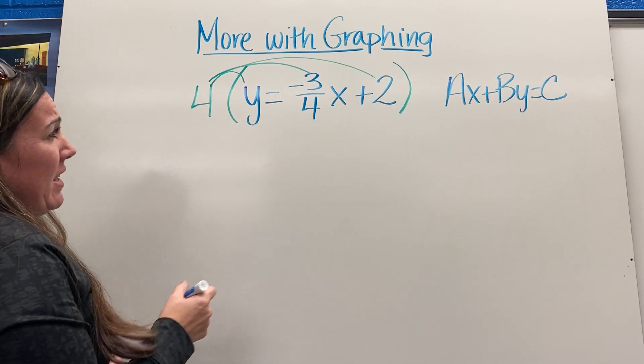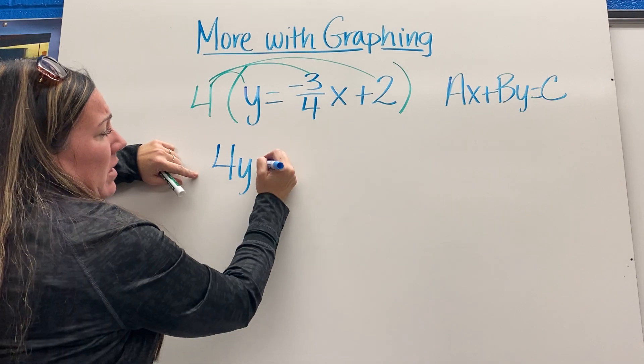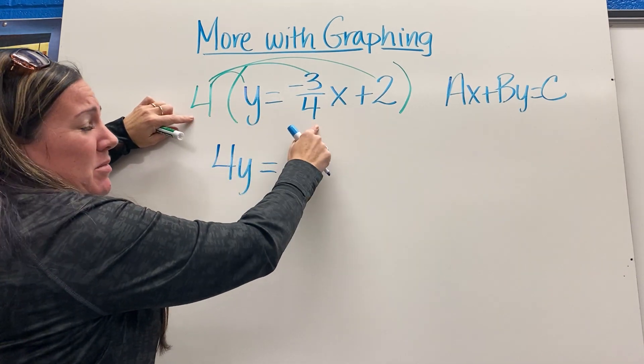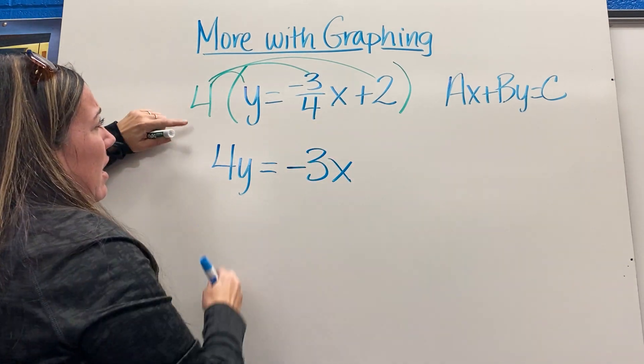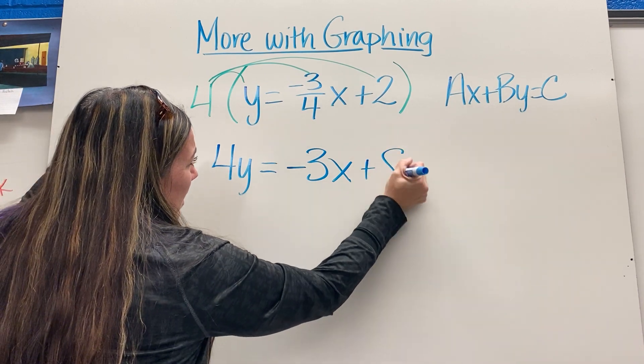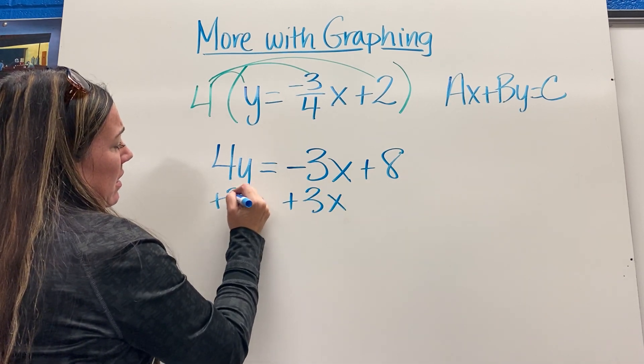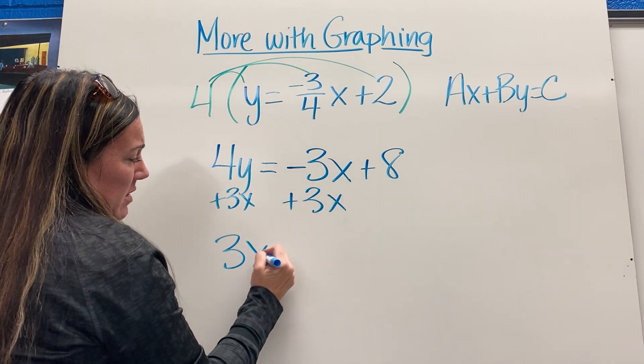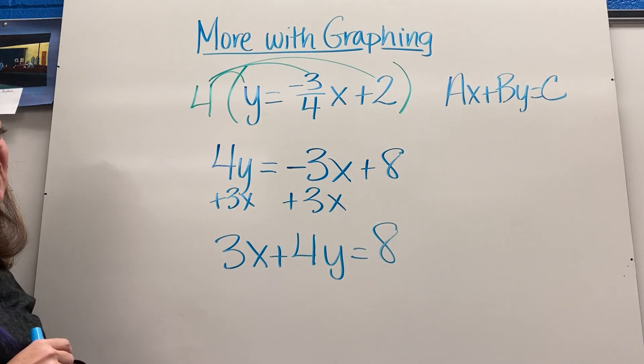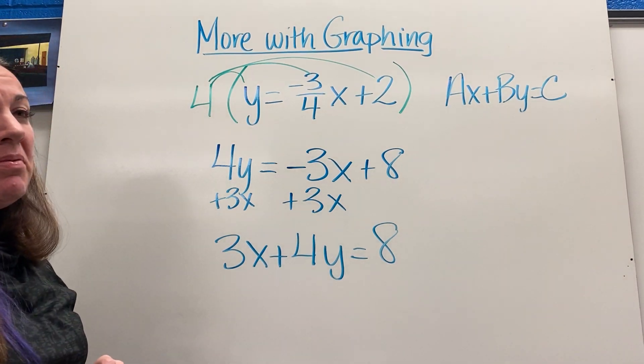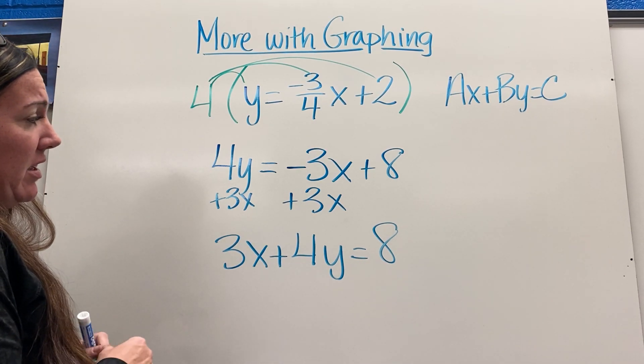What does that end up leaving me with? Well, 4 times y is 4y. I have my equal sign. 4 times negative three-fourths x is just negative 3x, and then 4 times 2 is positive 8. Then I can add 3x to both sides, and I end up getting 3x plus 4y equals 8. I still am going to have an x intercept that is not a whole number, but it's definitely a little bit easier and user-friendly in this form.